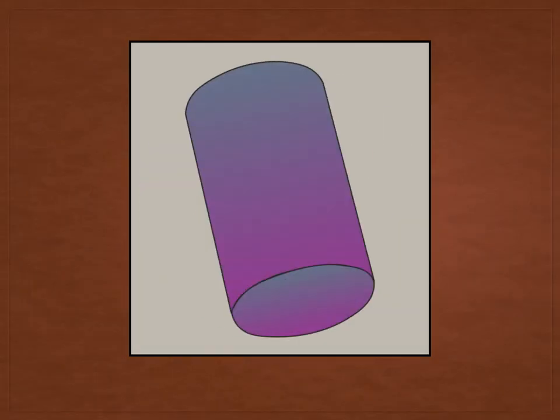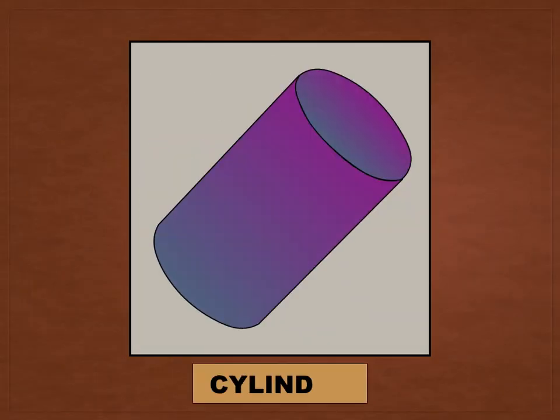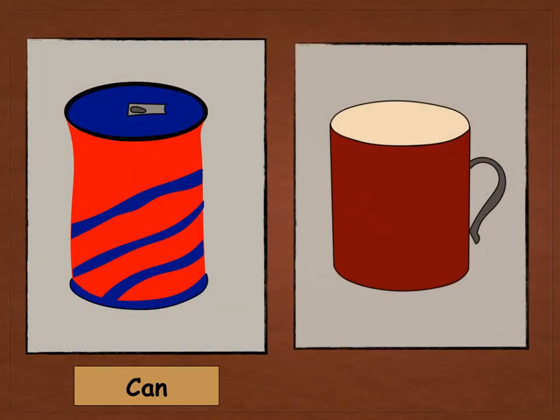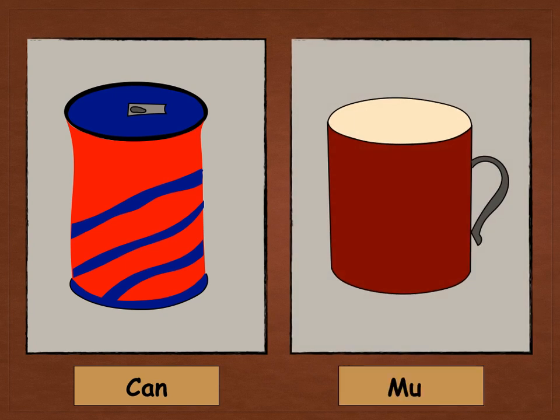Next is cylinder! Where can you find them? You can find them in a can, or like you drink in a cup, a mug!